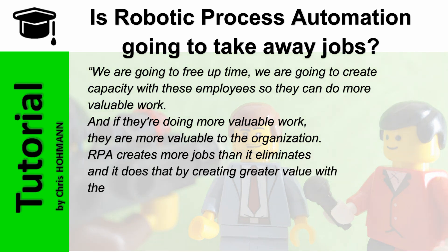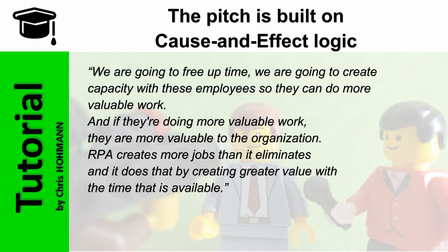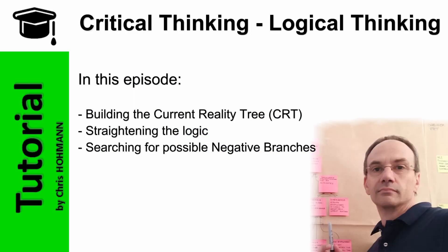RPA creates more jobs than it eliminates, and it does that by creating greater value with the time that is available. The vendor uses cause and effect logic to demonstrate the benefits of RPA, but his logic is fairly flawed, and I will use this example for building a current reality tree, improve it, and show how undesirable effects can unfold unintentionally.